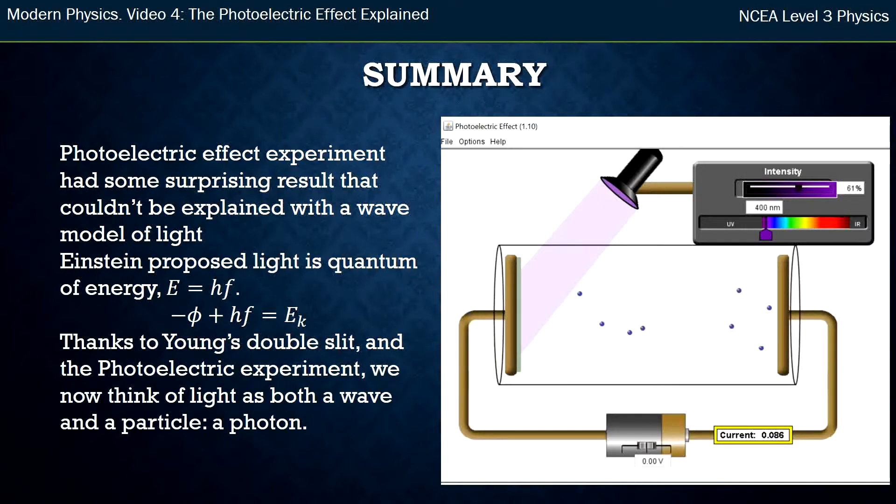So thanks to Young's double slit experiment, which we talked about before, and now the second experiment, the photoelectric effect, we now think of light as both a wave, it has wave properties, and a particle. And so that's what a photon is. It is wave-particle duality. It has both properties of a wave and both properties of a particle.